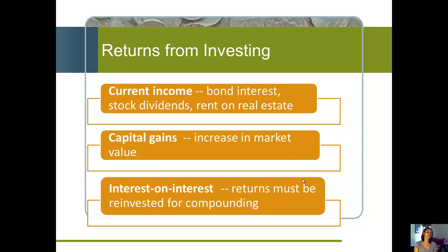The returns from investing come from different places. First, there's current income — on a bond that would be interest from coupon payments, on a stock it would be dividends, and on real estate that would be rent. Capital gains mean the increase in market value — how much that stock, bond, or real estate went up in value. And we also benefit from compound interest, meaning interest on interest.